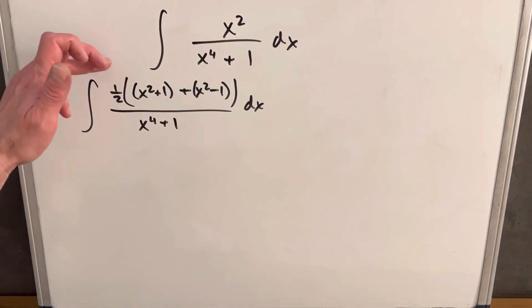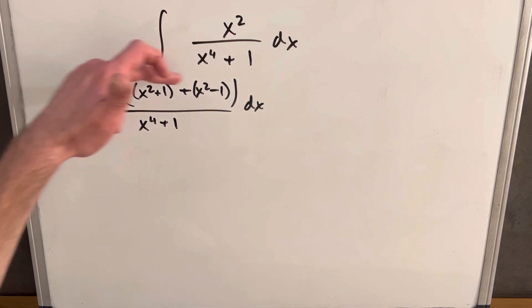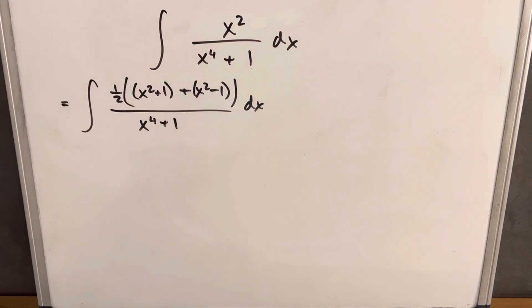After all that, what I've done is totally rewritten the numerator. Just noticing that I haven't changed it. This whole thing is still just x squared in our numerator, the same as what we have here.